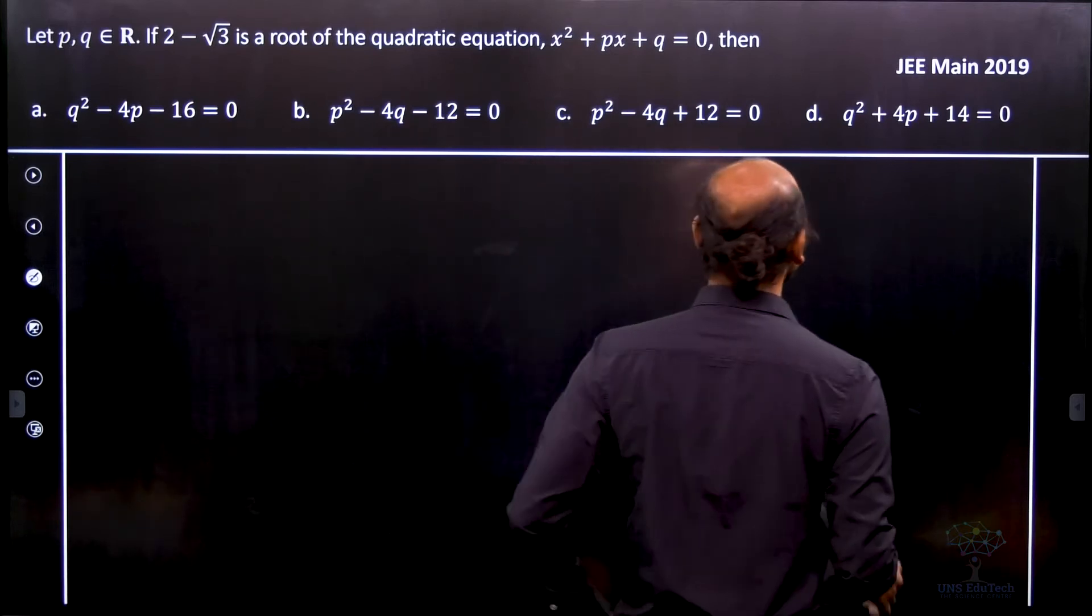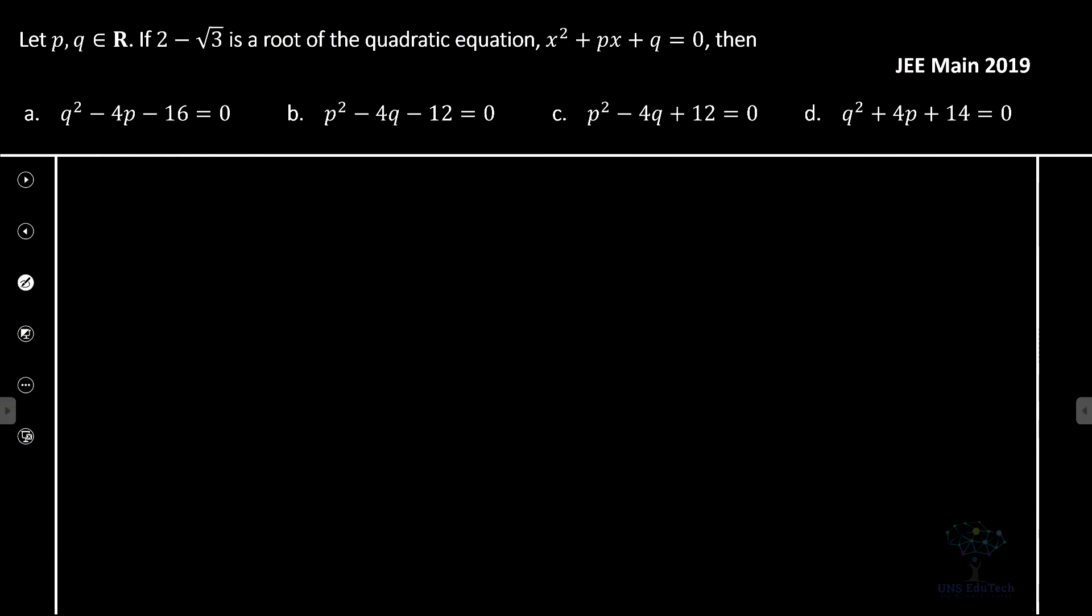So in that particular case we can see that it's given that x equals 2 minus root 3 is a root. So x equals 2 plus root 3 is also a root. So what that means is 2 plus root 3 and 2 minus root 3 are the roots of the given equation. What is that given equation? x squared plus px plus q equals 0.